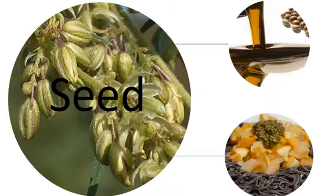Next, we're going to jump into seed. Seed can be used in two main categories: an oil that is kind of like a replacement to a vegetable oil or cooking oil. It's not the CBD oil that you hear people talk about — that's an entirely different thing, we'll talk about that next. You can also grind it up and basically use it as a flour substitute.